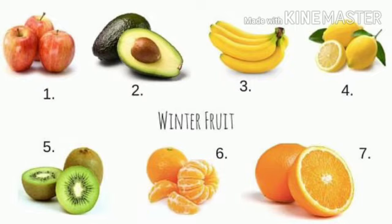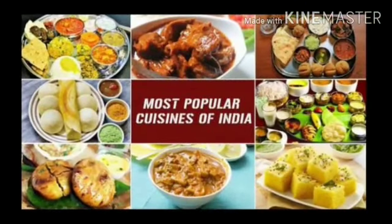When we talk about variety in food, we cannot forget the most popular cuisines of India. Every region or state has its own taste and flavor in food. If we talk about Maharashtra, jowar is grown on a large scale in the plateau region. Plateau means the area near mountains, plains and hills. Food prepared from jowar includes hurda, bhakri, dhapte, laya and so on.